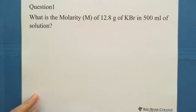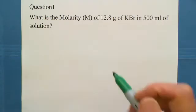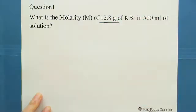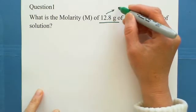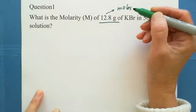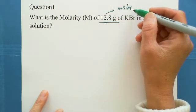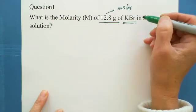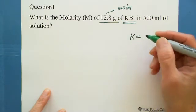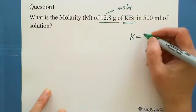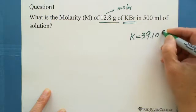Practice question. What is molarity of 12.8 grams of potassium bromide in 500 milliliters of solution? We're given 12.8 in mass, in grams. Looking for molarity, we need to convert this to moles. To convert 12.8 grams to moles, we need to find the molar mass for potassium bromide. You check the periodic table.